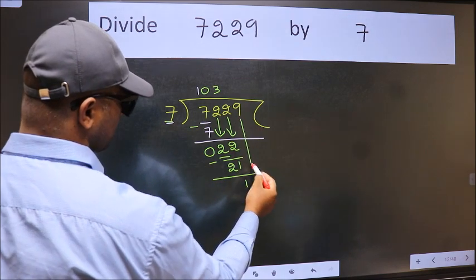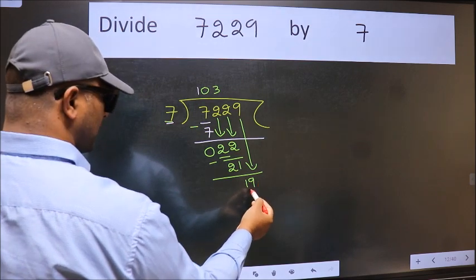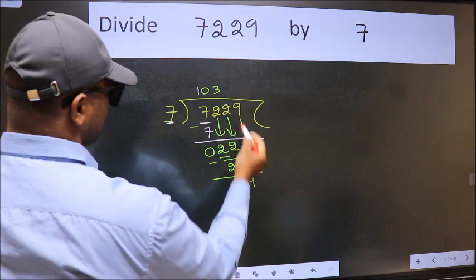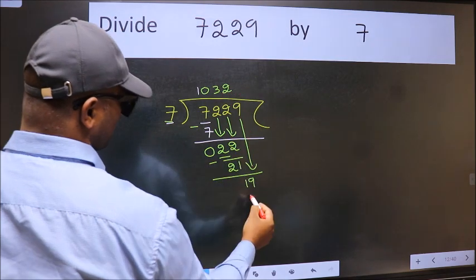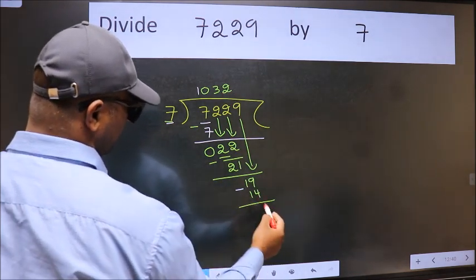After this, bring down the beside number, so 9 down. So 19. A number close to 19 in the 7 table is 7 twos, 14. Now we subtract. We get 5.